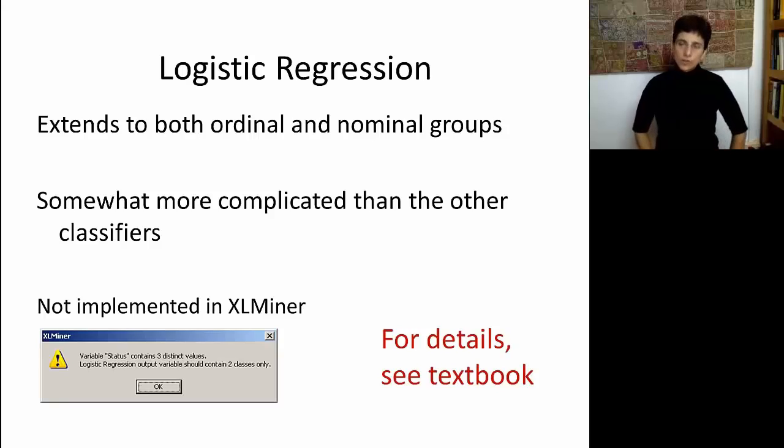Logistic regression is the only method from all these methods that we talked about that extends both to ordinal and nominal groups. These are two different ways of using logistic regression. In fact, you're going to have to specify ahead of time what type of categories you have, because the model for ordinal classes is different from the model for nominal classes. Some software will implement logistic regression for multiple classes, and some software will not. XLMiner, unfortunately, does not implement logistic regression for more than two classes. The textbook includes more details on how this model is built.